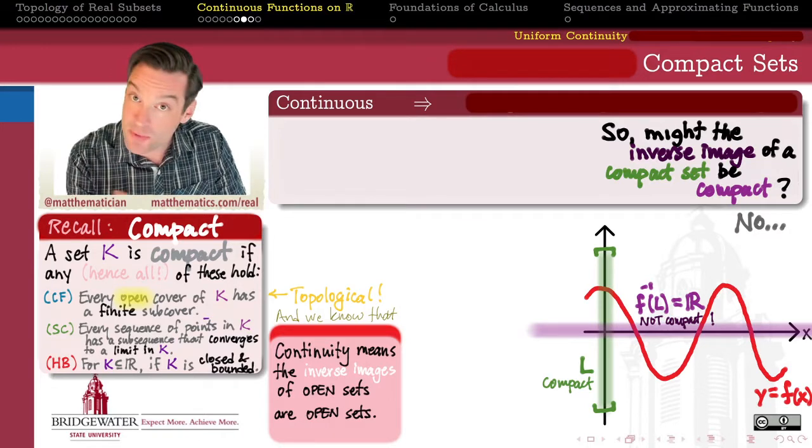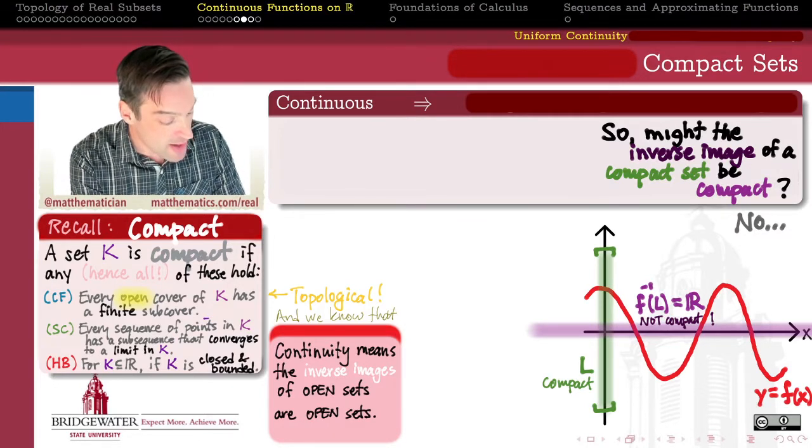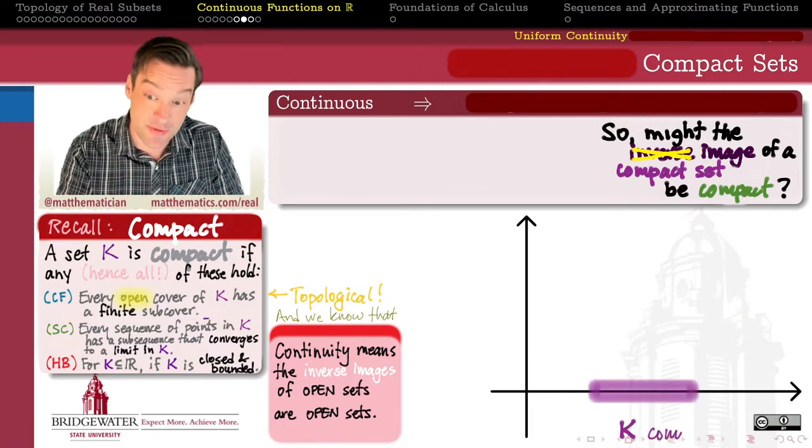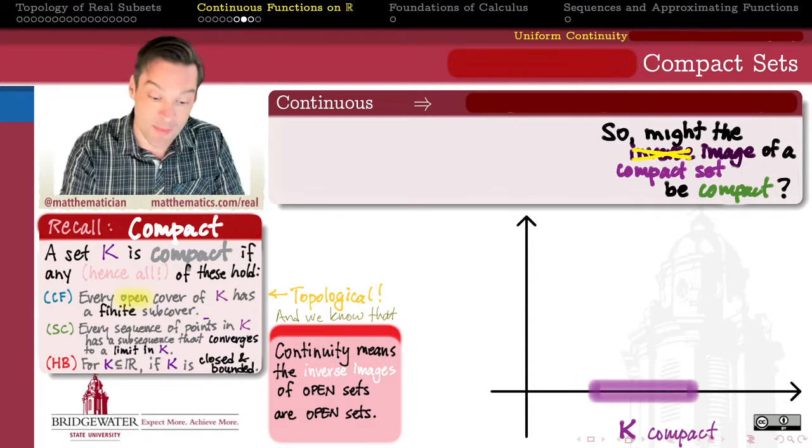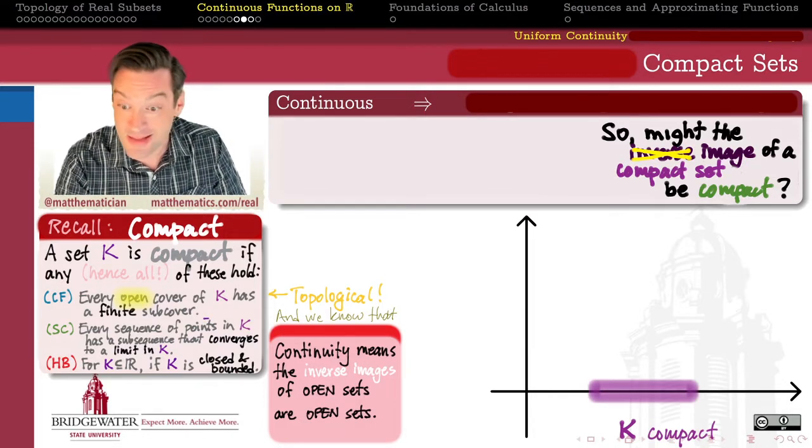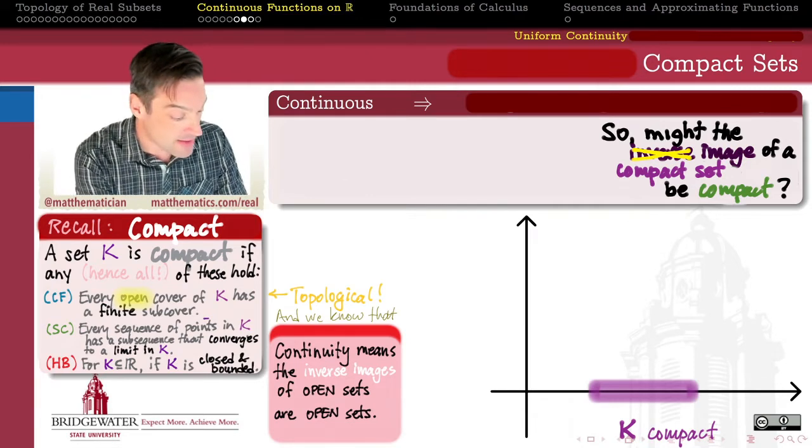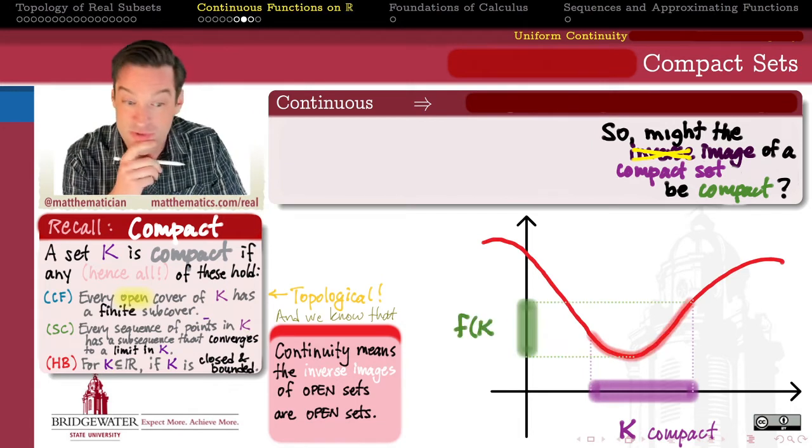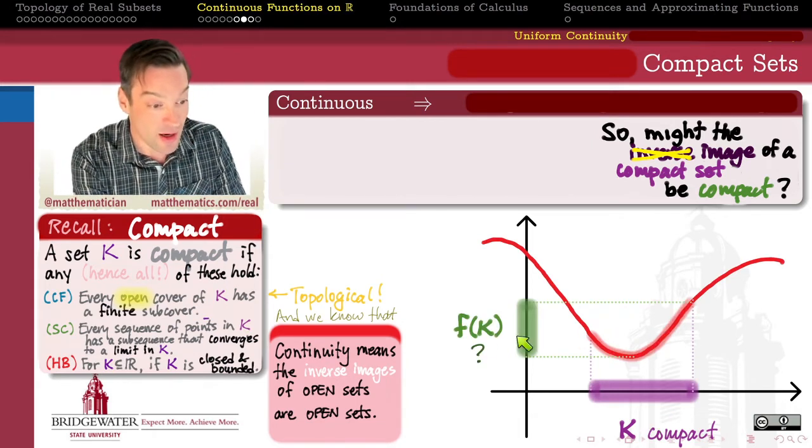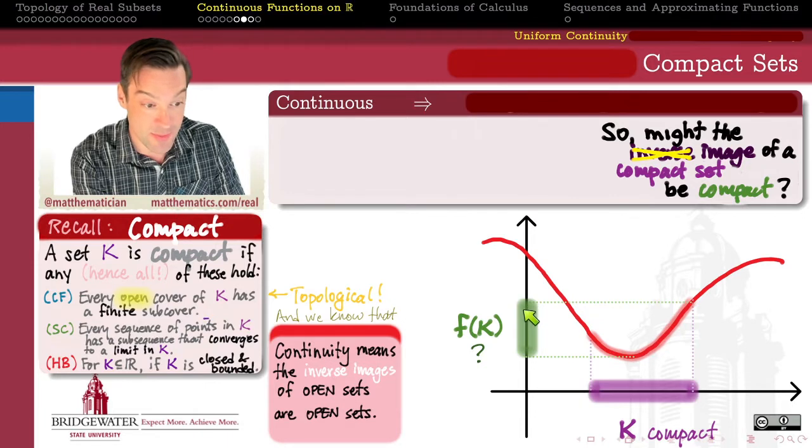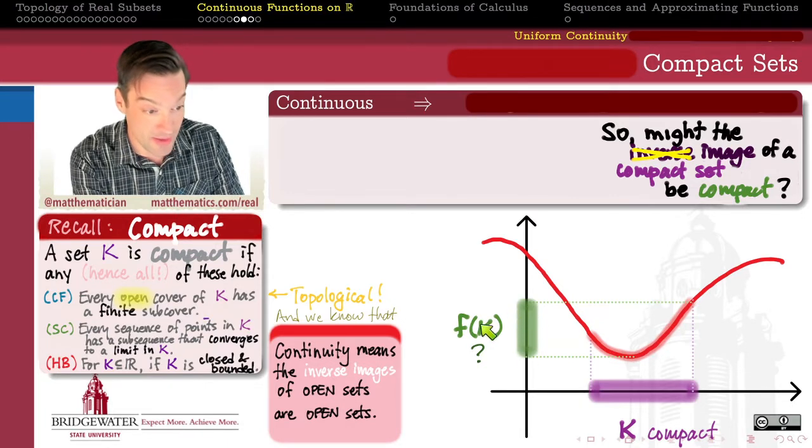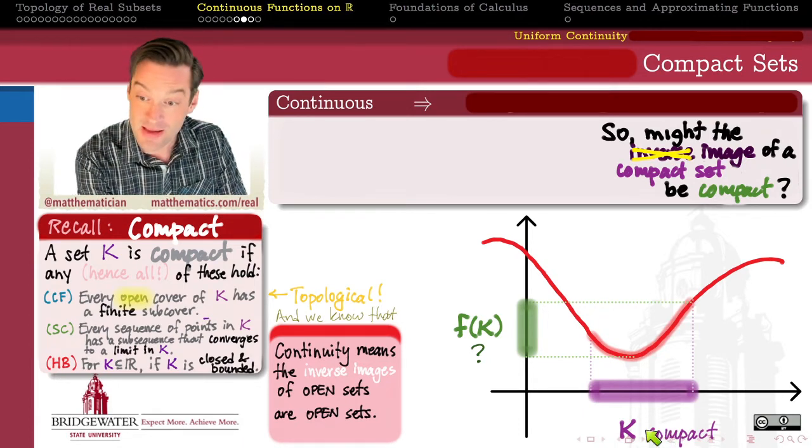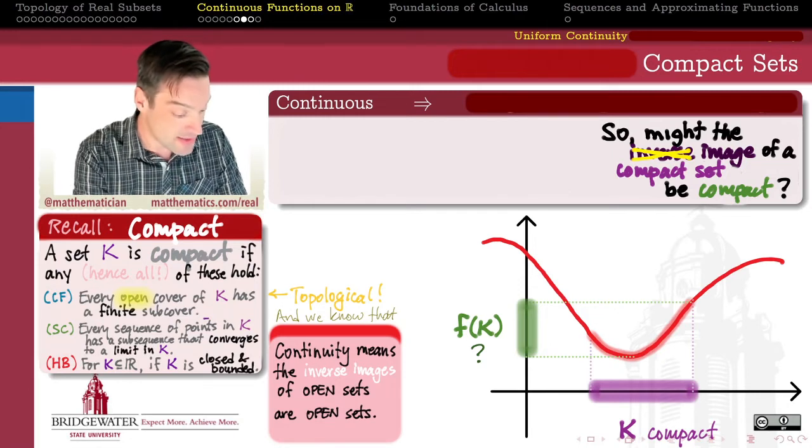And so, just as we did with connectedness a couple of videos ago, we should probably try to turn this around and say, well, what about the forward image? Might it be true that the forward image of a compact subset of the domain of the continuous function must be a compact subset of the range? Let's test that out. So, let's start with a compact subset of the co-domain of my function. I'm going to call it k. And suppose I have some continuous function, and I look at the image of that set under the continuous function. So, here's my image as a subset of the range of this function. Call it f of k. And so, the question is, if you tell me that k is a compact set, can I guarantee for you that f of k, its image, is a compact set?